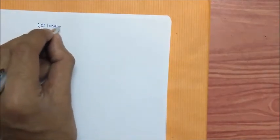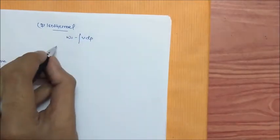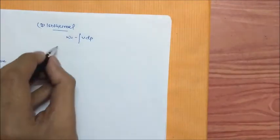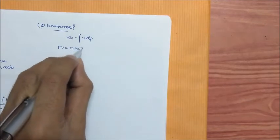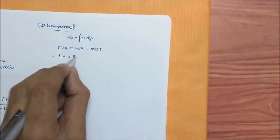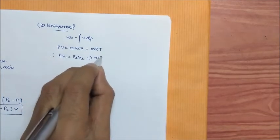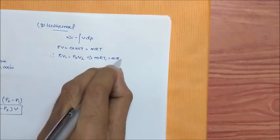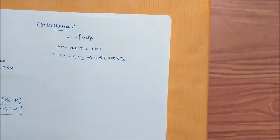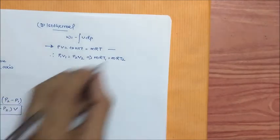The third process is isothermal process. The generalized formula for open system is w equals minus integral vdp. But the isothermal law is PV equals constant, which equals MRT, or it can be written as P1V1 equals P2V2, which equals MRT1 equals MRT2.